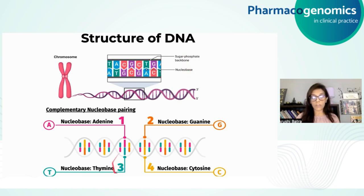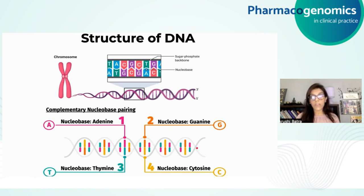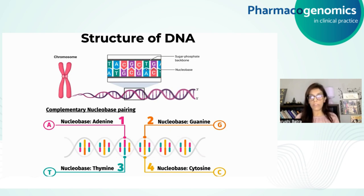Attached to each sugar is one of the four bases: adenine, cytosine, guanine, or thymine. The two strands are connected by chemical bonds between these bases — adenine bonds with thymine via two hydrogen bonds and cytosine binds with guanine via three hydrogen bonds. The sequence of bases along DNA's backbone encodes biological information such as instructions for making a protein or an RNA molecule.